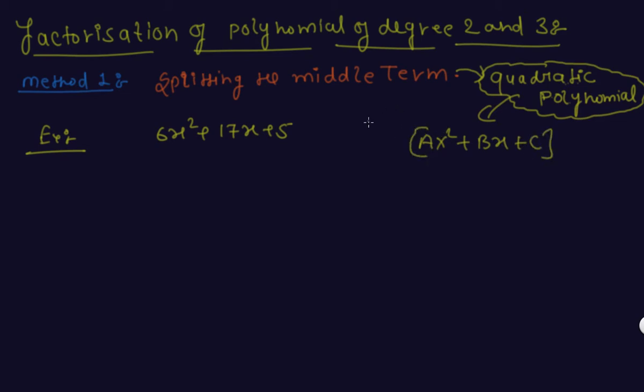Now take an example: 6x² + 17x + 5. How to solve or factorize this quadratic polynomial by the splitting the middle term method.